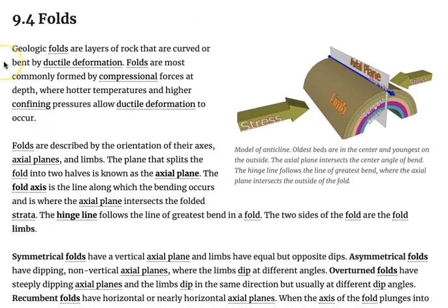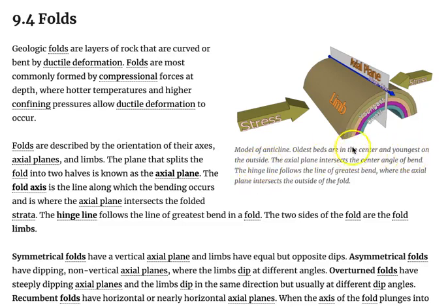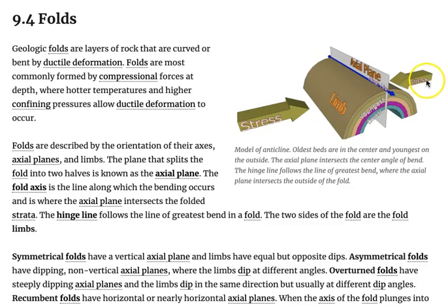Geologic folds are layers of rock that are curved or bent by ductile deformation. Folds are most commonly formed by compressional forces at depth, where hotter temperatures and higher confining pressures allow ductile deformation to occur. This illustration here is a model of an anticline. The oldest beds are in the center and the youngest on the outside, which agrees with the law or principle of superposition. The arrows on the outside indicate compressional stress deforming the rock through ductile deformation, bending it into an anticline.